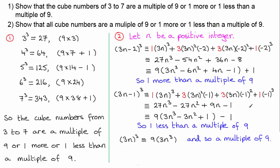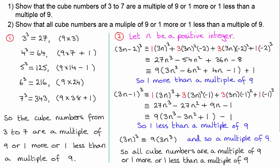So by this method I've been able to show that all cube numbers are a multiple of nine, or one more or one less than a multiple of nine. Don't forget to write that conclusion in. I hope that's given you some idea of how to do this — well done if you got it right, and if not, hopefully you can see how to do it now.